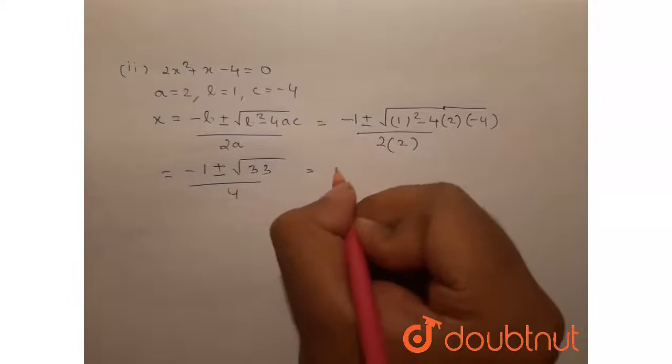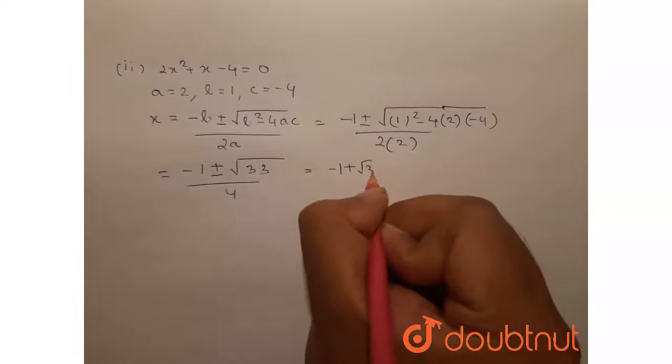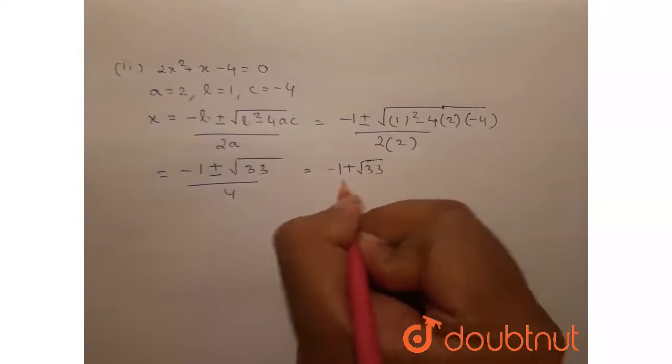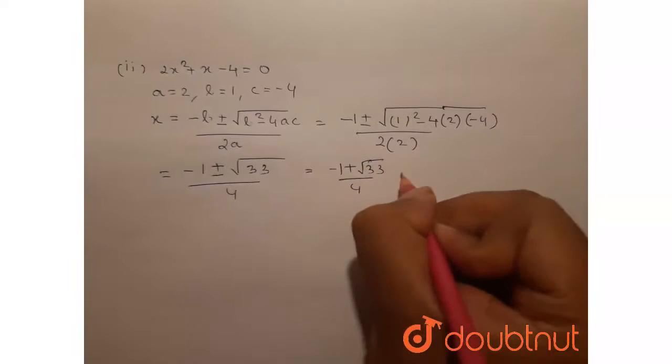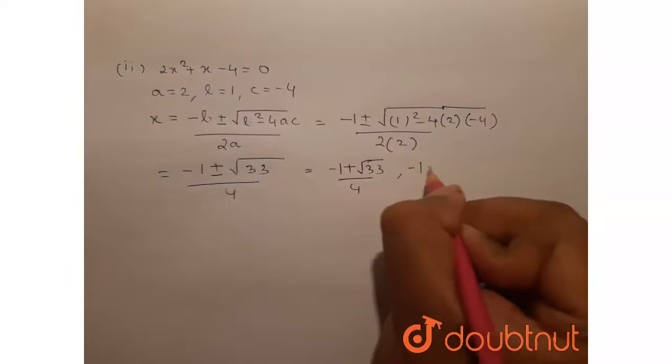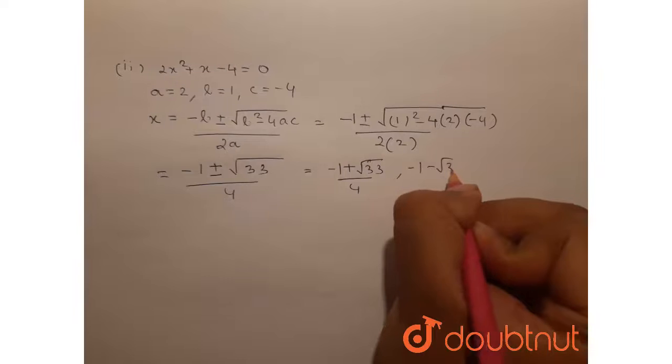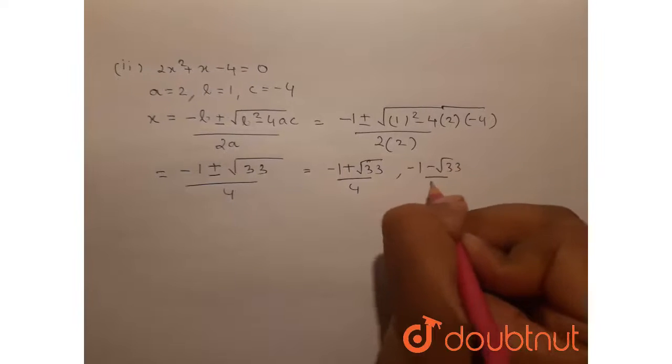Therefore, the roots are (minus 1 plus root 33) by 4 and (minus 1 minus root 33) by 4.